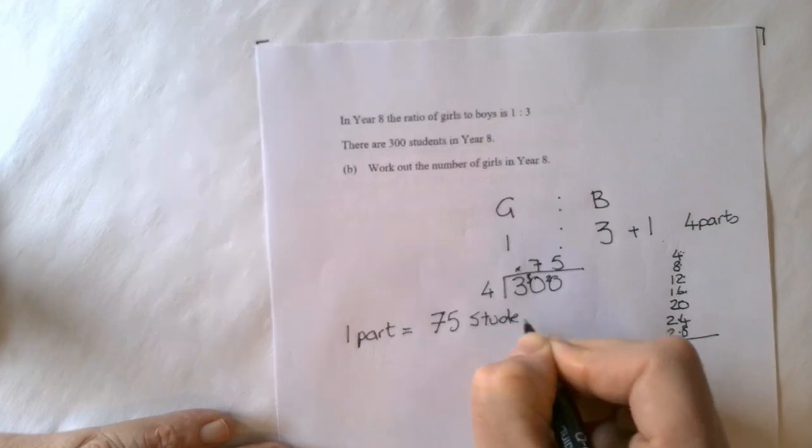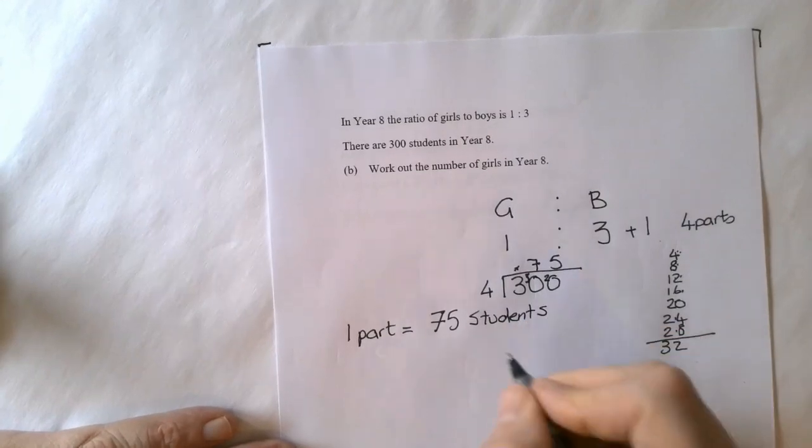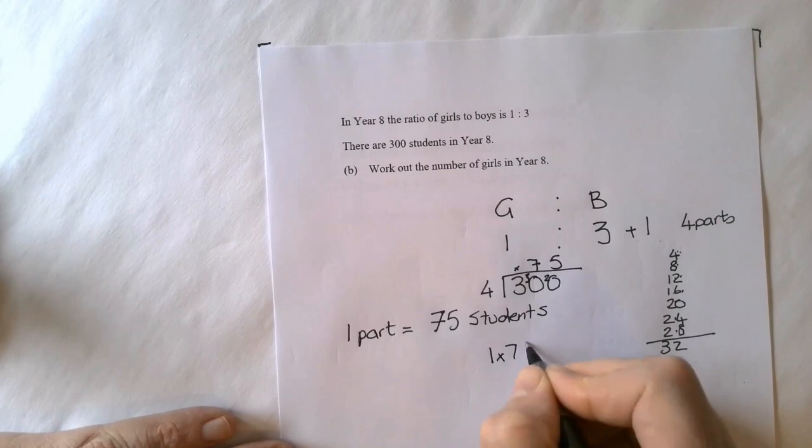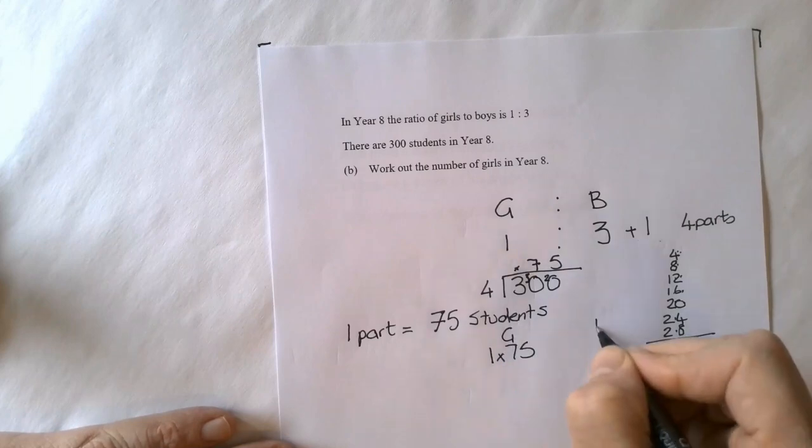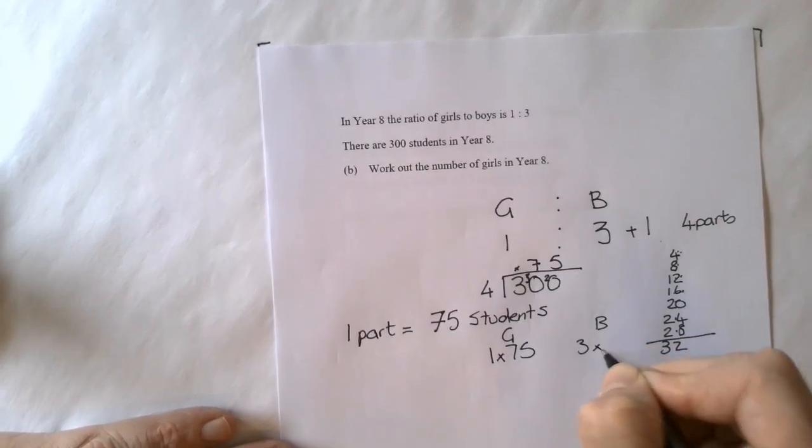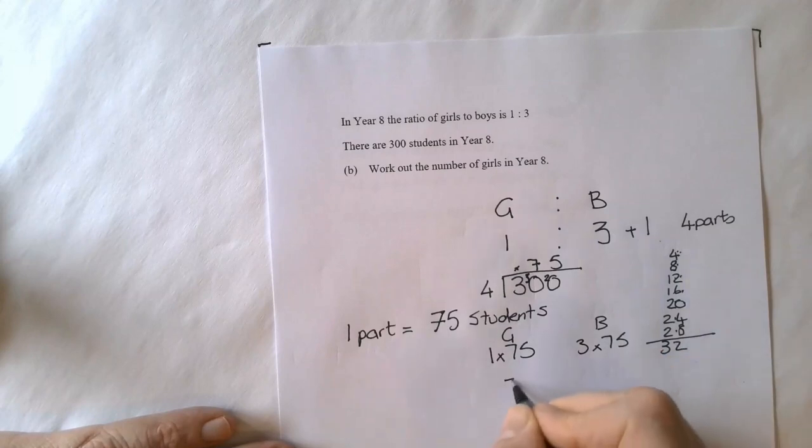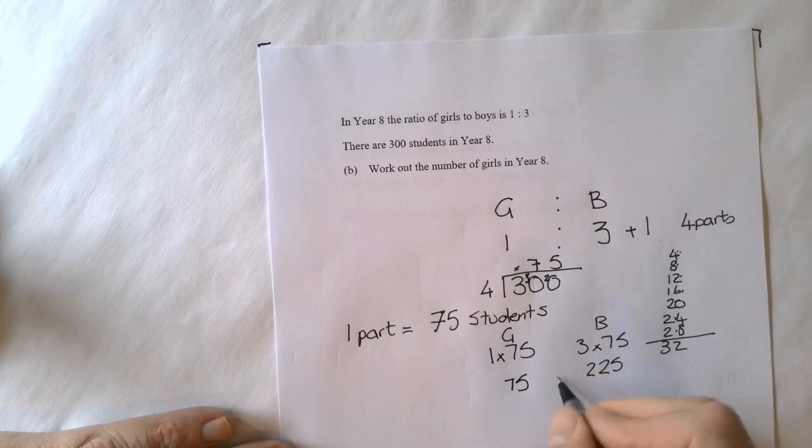So for girls we do 1 multiplied by 75 for the girls, and for the boys you do 3 multiplied by 75. That will give you 75 here and 225 here. Add those together equals 300.